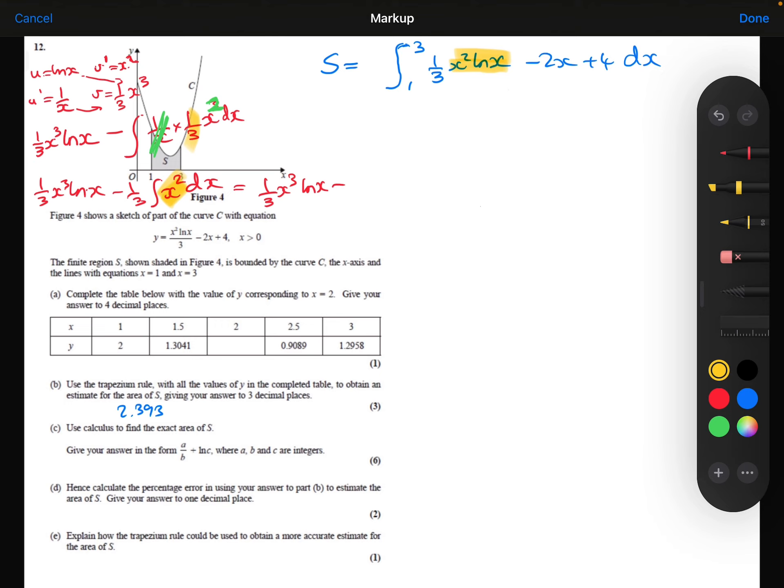The integral of x squared is, this is going to integrate to be 1 third x cubed, which when multiplied by the 1 third will be 1 ninth x cubed. So this is the integral of this.